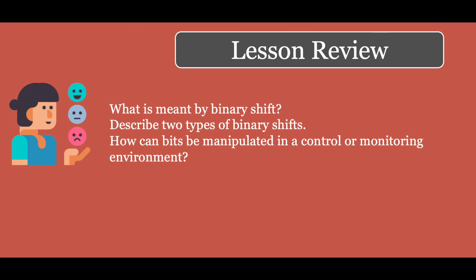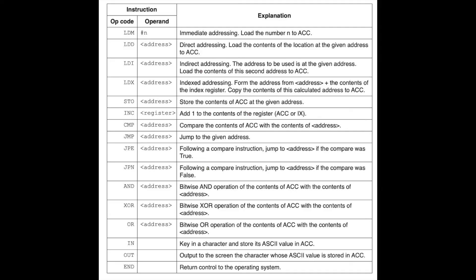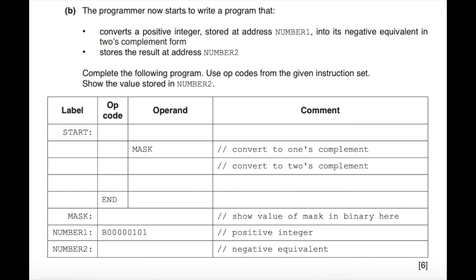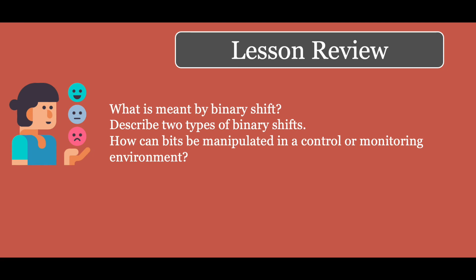You should also be able to explain how bits can be manipulated in a control or monitoring environment. These exam questions typically give you a register with bits and ask you to apply a mask — an AND mask, OR mask, or XOR mask — using assembly code. An accumulator and a register will each have a value, and applying AND or OR gives a different set of output values. An example is shown on screen where you may need to write an assembly language program or manipulate given registers, applying an XOR or AND mask to produce an output.